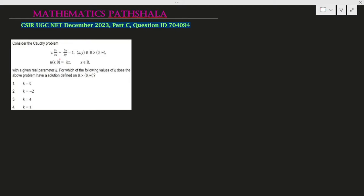For this given Cauchy problem we can write the Lagrange Auxiliary Equation as dx/u equals dy/1 equals du/1. Taking the second and third fractions, we get dy equals du, and integrating on both sides we get u minus y equals c1, where c1 is an arbitrary constant.